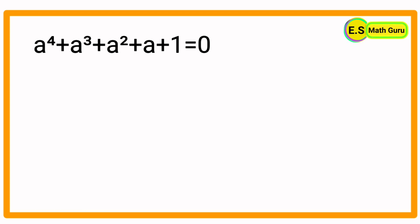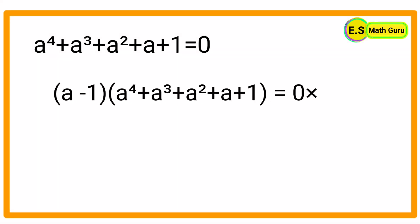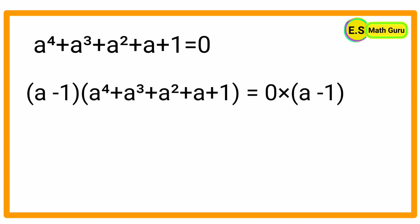Then we get (a - 1) × (a⁴ + a³ + a² + a + 1) = 0 × (a - 1). Now let us multiply (a - 1) with each term of the expression a⁴ + a³ + a² + a + 1.